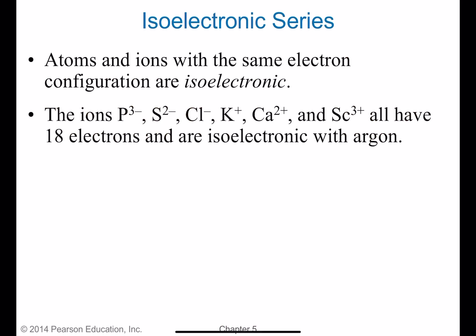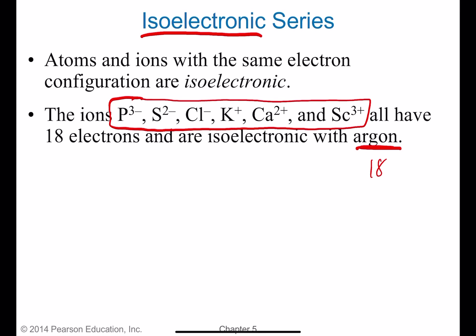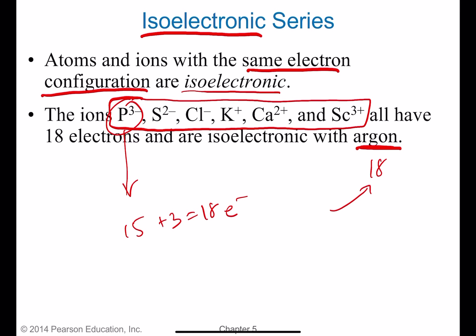We're now introducing a new term: isoelectronic. Isoelectronic means having the same number of electrons as a noble gas. For example, argon is element number 18 and has a complete outer shell. Phosphorus is element number 15; if it gains three electrons it also has 18 electrons — the same as argon. So isoelectronic means the same number of electrons and, as a result, the same electron configuration — how those electrons are placed in energy levels, sublevels, and orbitals.